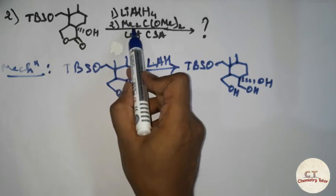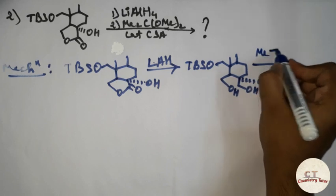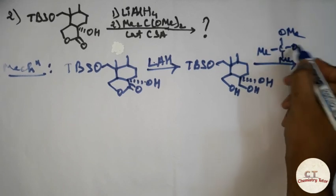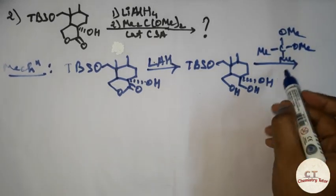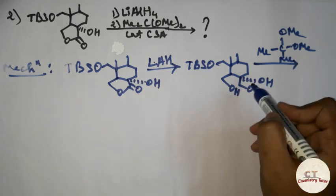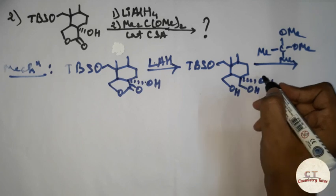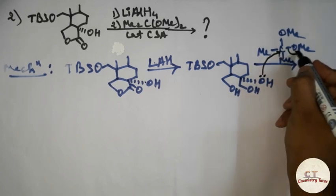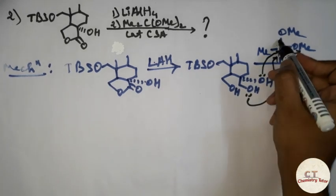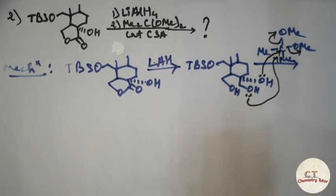Further, the next reaction is with 2,2-dimethoxypropane (2MeOMe). Even if you don't know how this reaction occurs, this one is for protection of a 1,2-diol. If you don't know that, you can reason it out: it can attack here, one OMe will leave, and the lone pair on the oxygen will again attack, another OMe will leave, giving a five-membered ring — one, two, three, four, five.